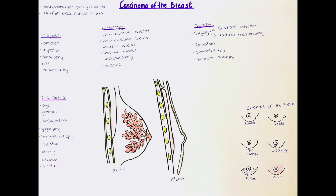The lobes are connected with lactiferous ducts, which transport the milk when it is produced towards the nipple. The nipple has several openings for the milk to be drained. Around the nipple is the areola, the red round area found centrally on the breast.